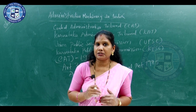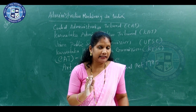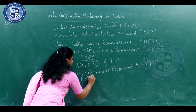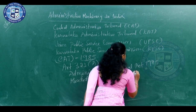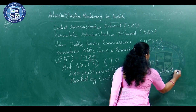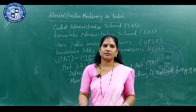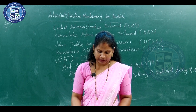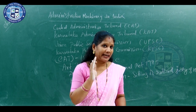The Central Administrative Tribunal is headed by a chairman who has been a sitting or retired judge of a High Court. Besides the chairman, it consists of 16 vice chairmen and 49 members.